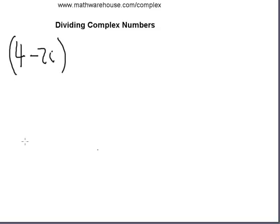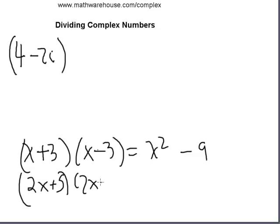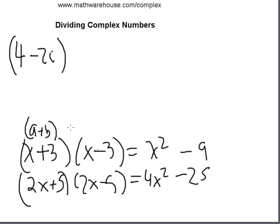You may remember from Algebra 1 or Algebra 2 that if you multiplied (x+3)(x-3), something special happened — you ended up with a difference of squares: x squared minus 9. And this holds for anything: (2x+5)(2x-5), or (a+b)(a-b), always gives you a squared minus b squared, which in that case is 4x squared minus 25.